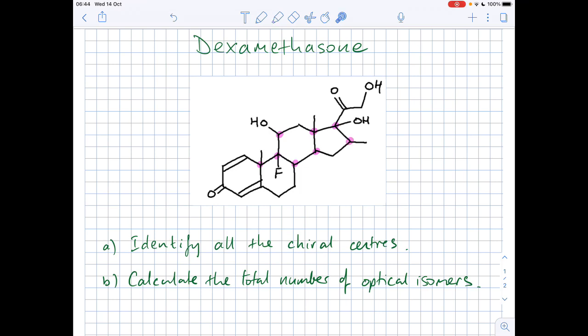So all together we've got one, two, three, four, five, six, seven, eight. So to calculate the total number of optical isomers, it's just two to the power of the number of chiral centres. So it's two to the power of eight, which is 256.